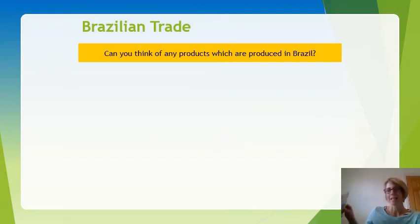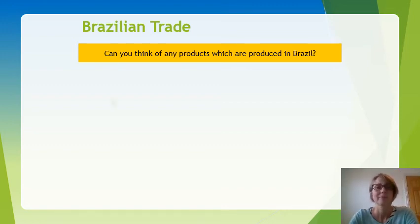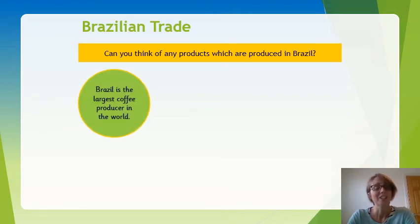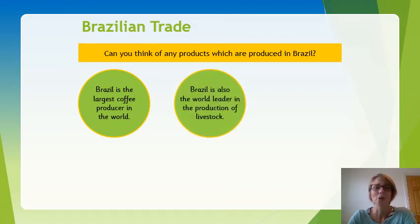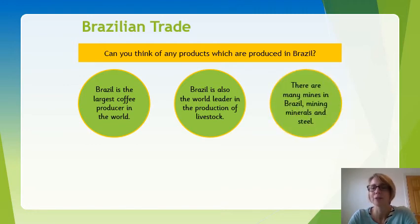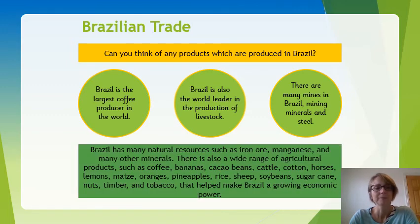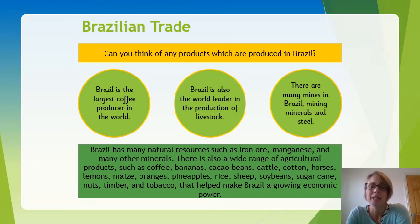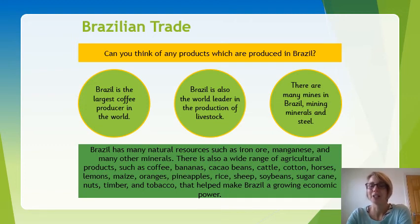Looking at Brazilian trade — which products come from Brazil? Brazil is the largest coffee producer in the world and the world leader in livestock production. There are also many mines in Brazil, mining minerals and steel. Natural resources include iron ore and manganese, and crops and products such as coffee, bananas, cacao beans, cattle, cotton, horses, lemon, maize, and oranges — all helping make Brazil a growing economic power.